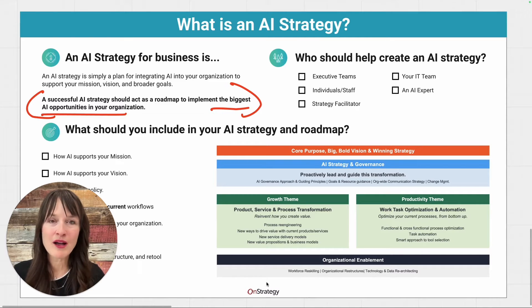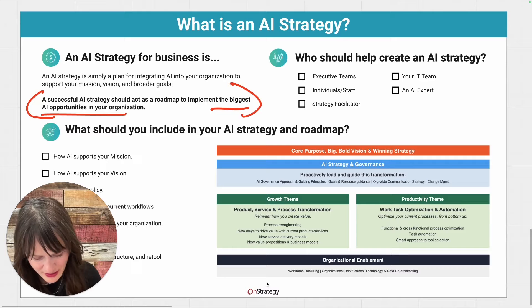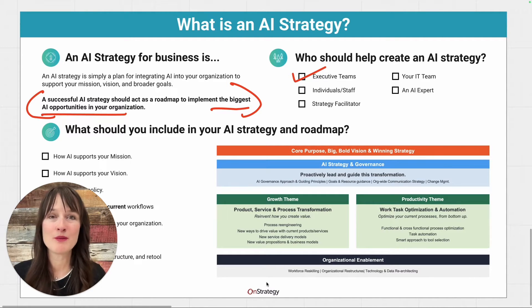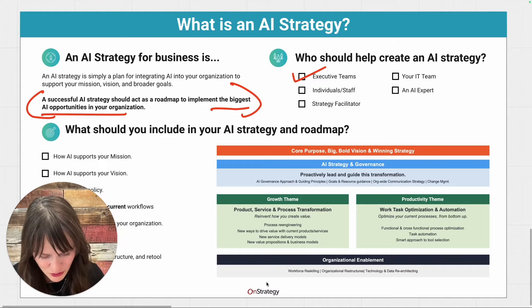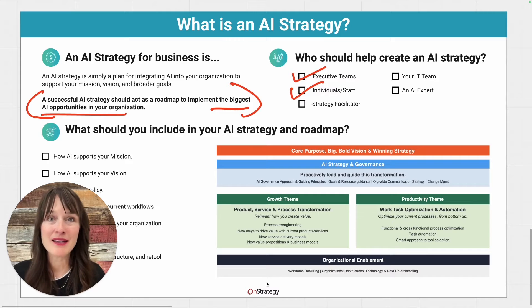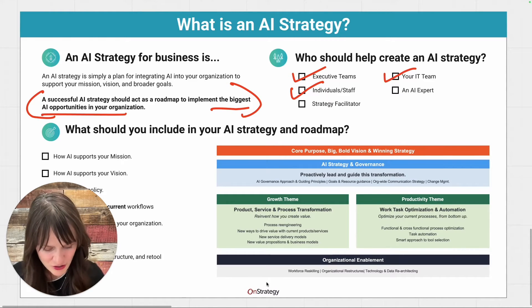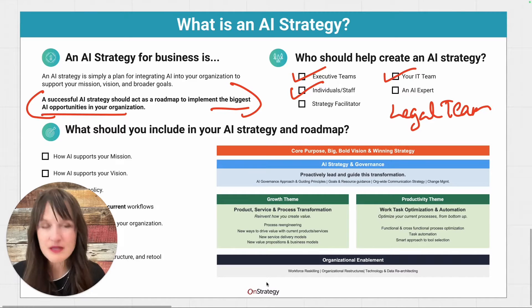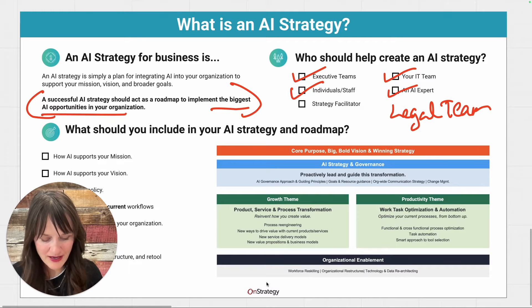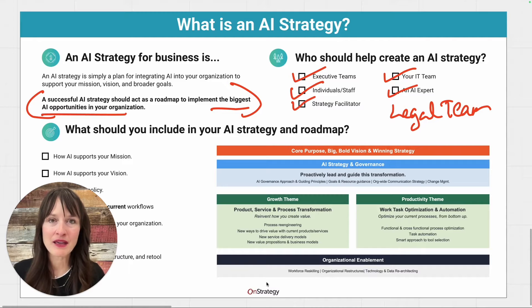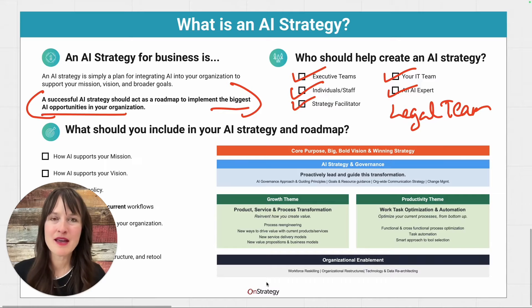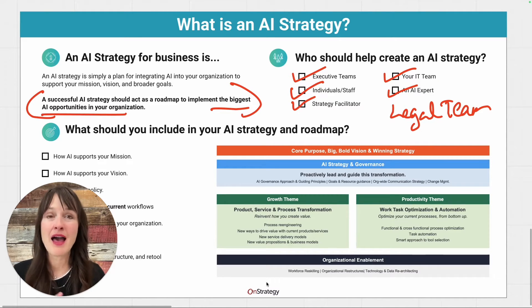Who should help you create an AI strategy? There are a bunch of different folks that you need to have in the mix at different times, but for sure it needs to be led by your executive team. We need our executive teams to set the guiding principles for what is going to be responsible AI in organizations. Certainly, at an individual and staff level, people have a lot of ideas about what can be done to improve the operations and processes. Your IT team needs to be there, as does your legal team. External resources you might consider would be an AI expert and a strategy facilitator. Having some AI expertise in the room to guide or evaluate the AI strategy and opportunities has been helpful to accelerate moving from idea to execution.